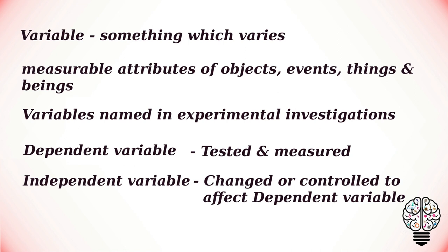For example, in an experiment we might change the type of information given to participants to see what effect this might have on the amount of information remembered. In this example, the type of information is the independent variable because it changes, and the amount of information remembered is the dependent variable because it is being measured. It is very important in psychological research to clearly define what you mean by both your independent and dependent variables.